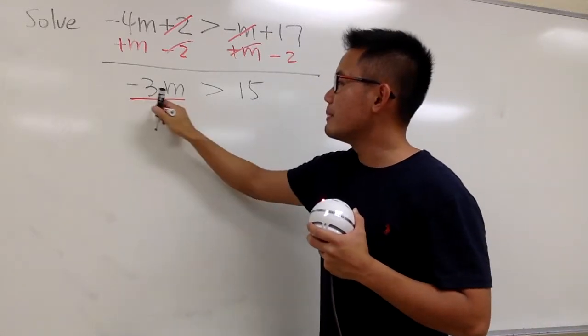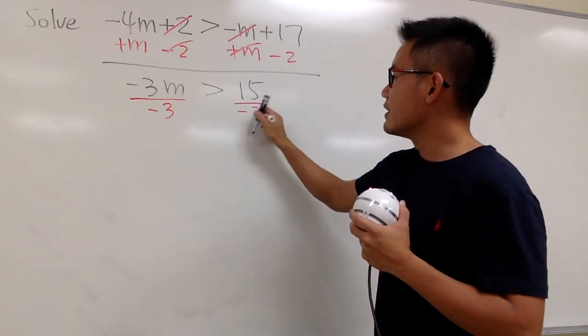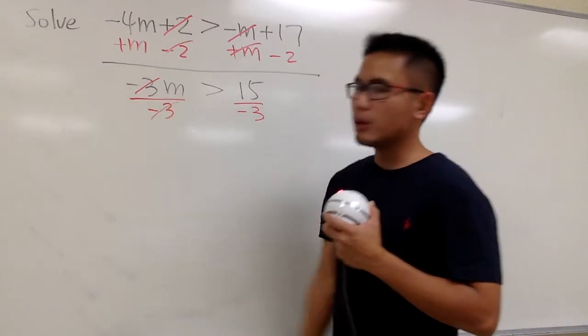We have to divide both sides by negative 3. I will also divide this by negative 3, so that you see this and that will be cancelled.